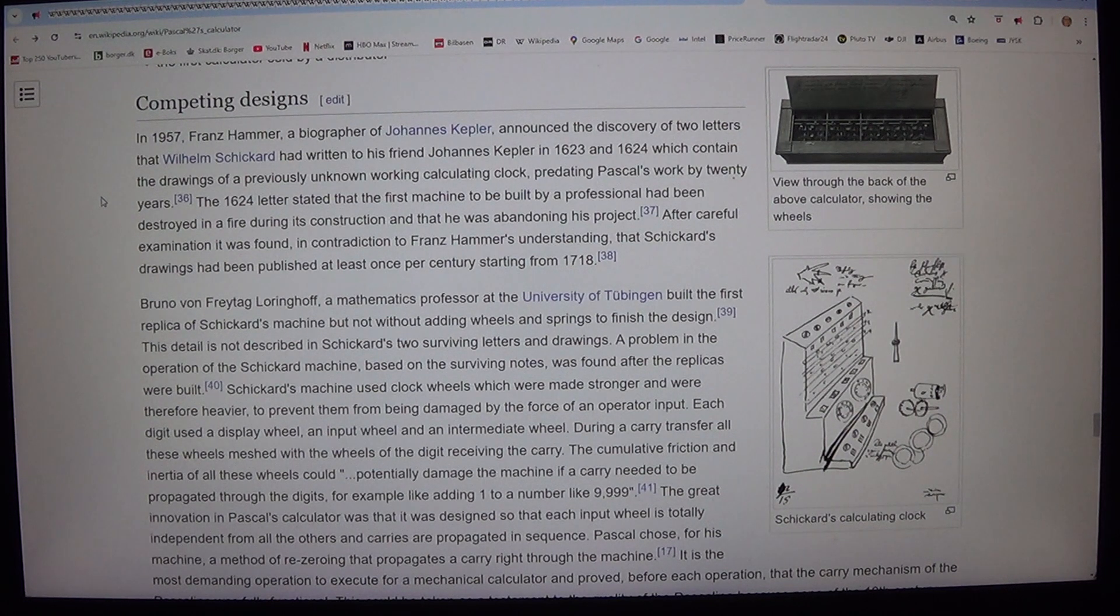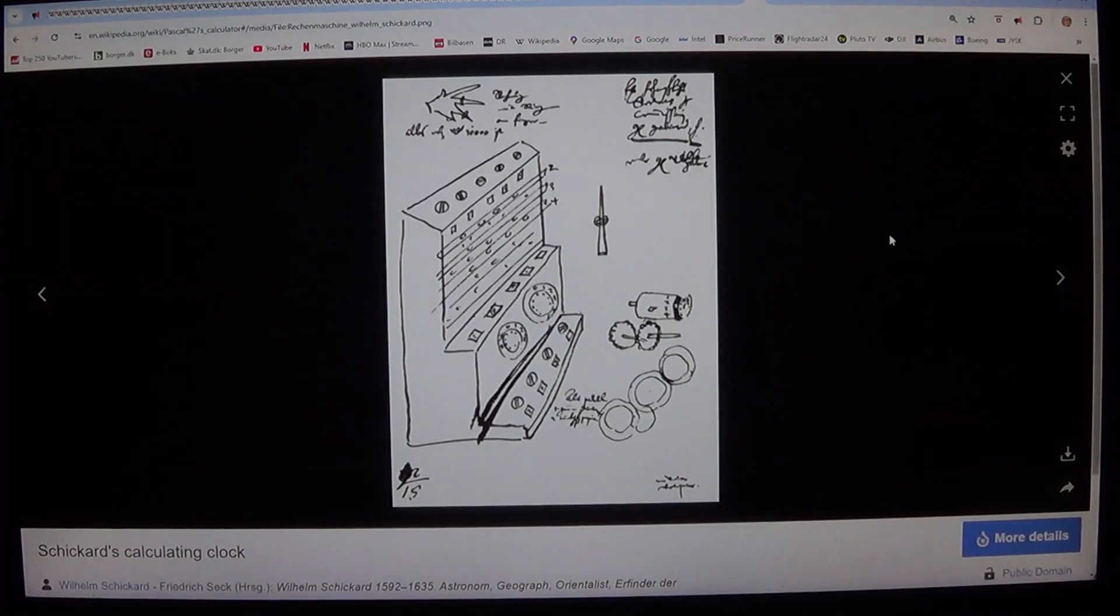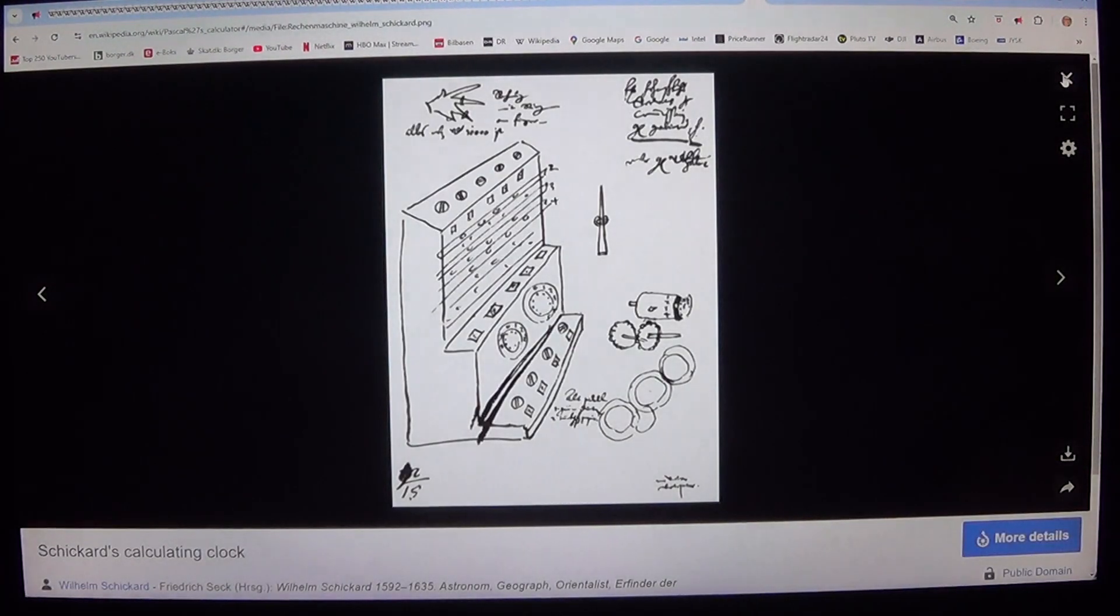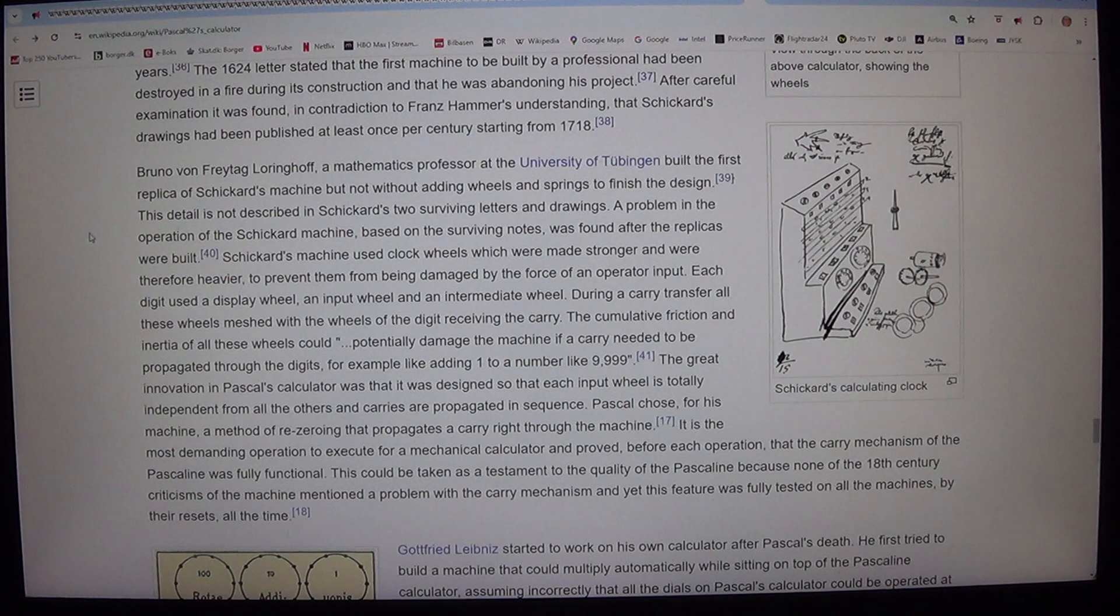Bruno von Freytag Loringhoff, a mathematics professor at the University of Tubingen, built the first replica of Schickardt's machine but not without adding wheels and springs to finish the design. This detail is not described in Schickardt's two surviving letters and drawings. A problem in the operation of the Schickardt machine, based on the surviving notes, was found after the replicas were built.